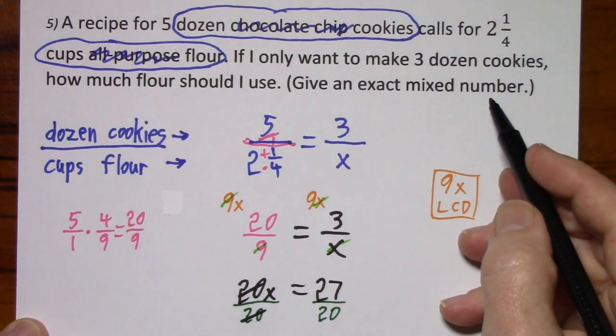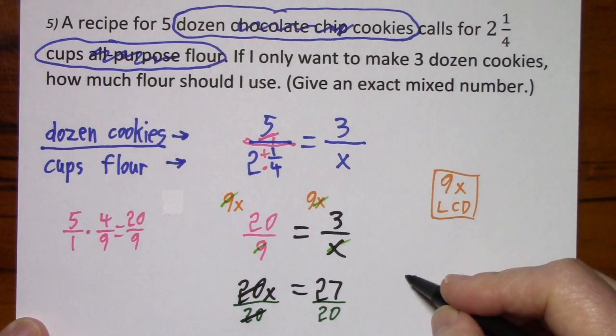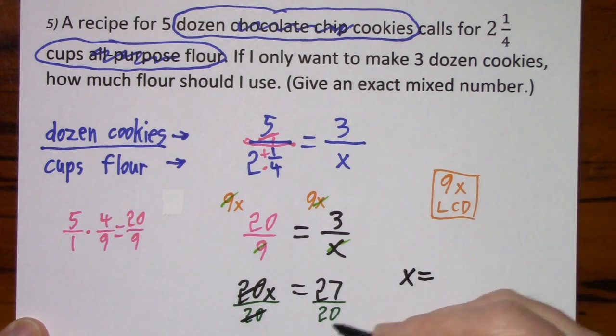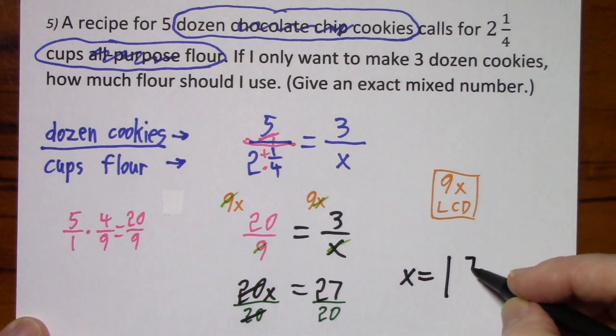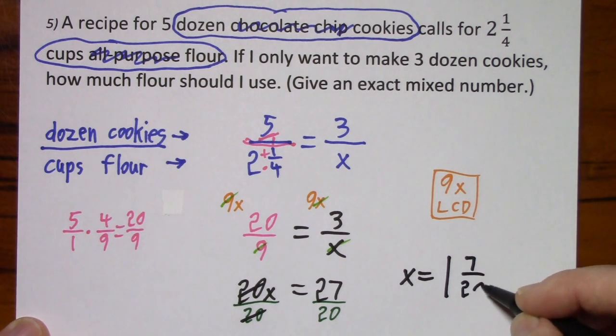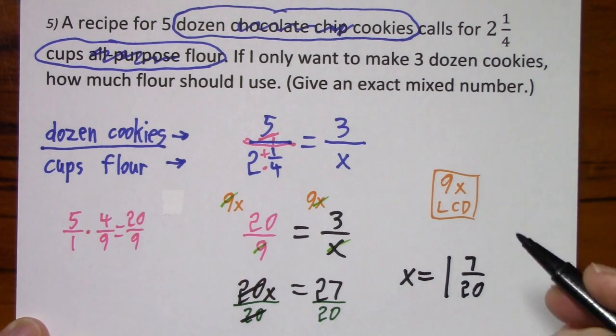They want an exact mixed number. So X is equal to one with seven left over. And this is cups.